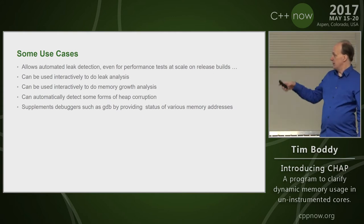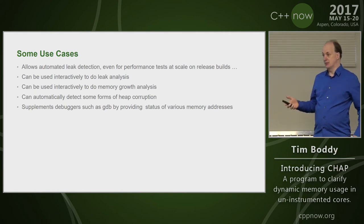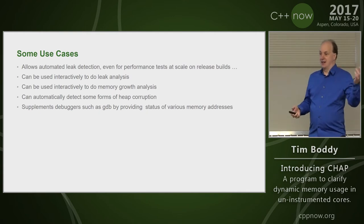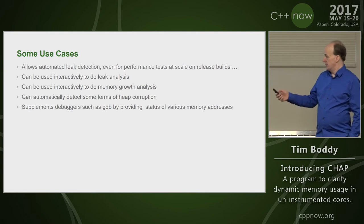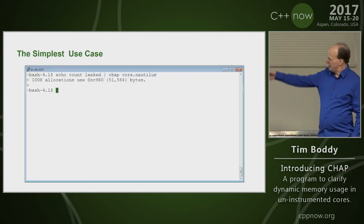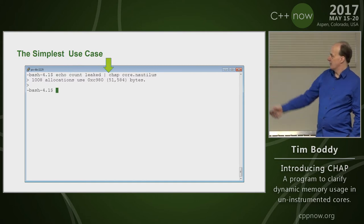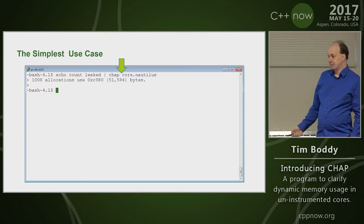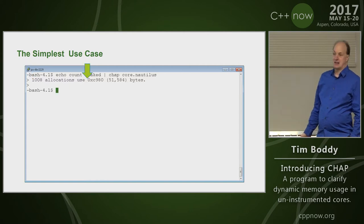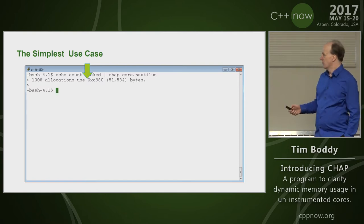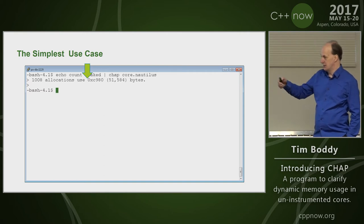You can supplement a debugger like GDB because it'll allow you to say, 'Tell me what's going on with this address — is it allocated? What type is it?' This is a very simple use case: I passed 'count leak' as a command to CHAP, specified the core (which was from Nautilus), and it said there were some leaks and this is how much space they used. People often feed that into scripts, and they typically grab a core at the end.